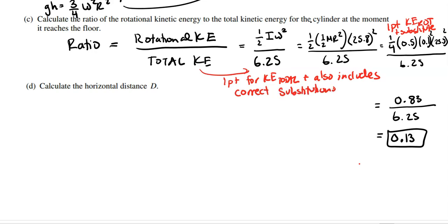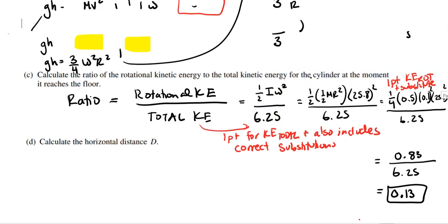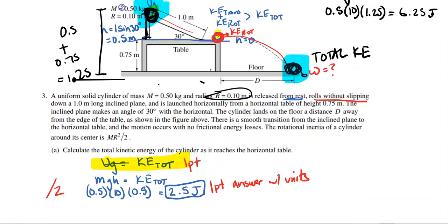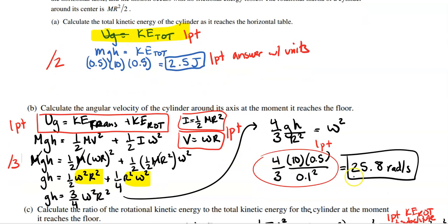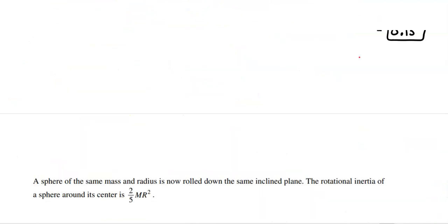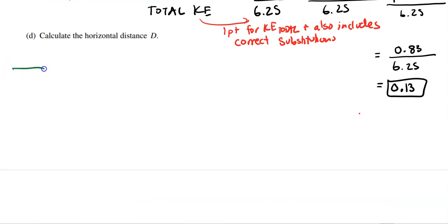For part D, we're calculating the horizontal distance d from the table edge to where it hits the floor. This is a projectile motion problem. We already found omega = 25.8 rad/s, so linear velocity is ωr = 25.8 × 0.1 = 2.58 meters per second. We'll need that for the horizontal direction.